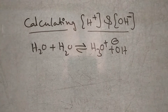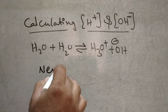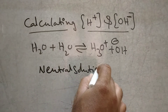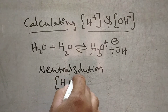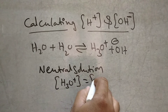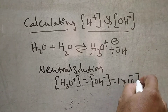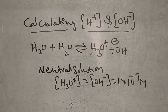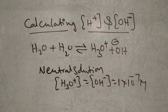If it is a neutral solution, then the H plus ions, or H3O plus ions, are equal to OH minus ions. That is 1 into 10 to the power of minus 7 M. The concentration of H plus ions as well as OH minus ions are both equal, so that is why they are neutral.